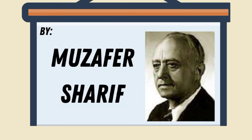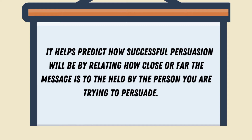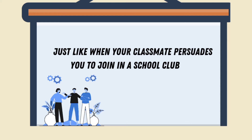Social Judgment Theory was first developed in the 1960s by Muzaffar Sharif, Carolyn Sharif, and Carl Hevlan. It explains how a single piece of information or idea can change our attitude and how it affects our decision-making. It helps predict how successful persuasion will be by relating how close or far the message is to the position held by the person you are trying to persuade — just like when your classmate persuades you to join a club organization in school. How you react and the decision you make with the persuasion is how this theory identifies which category of your behavior falls on.